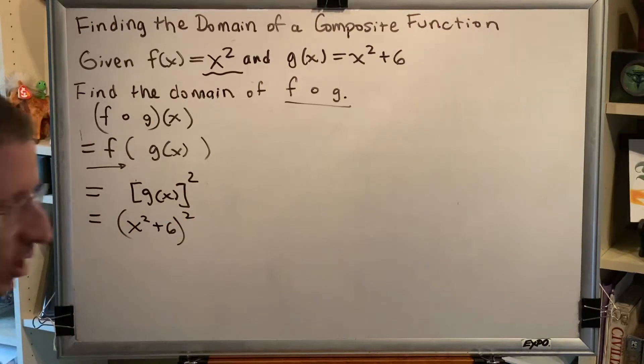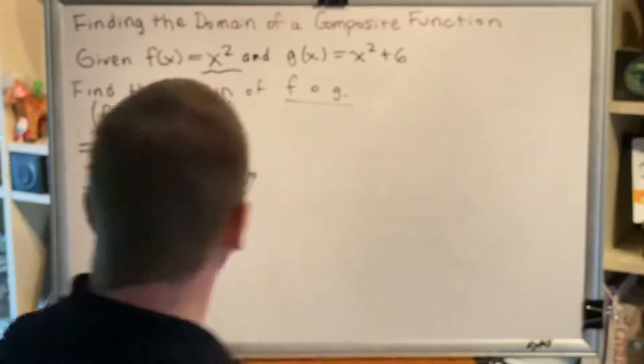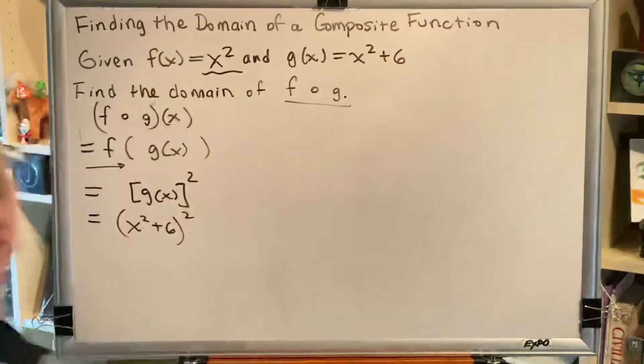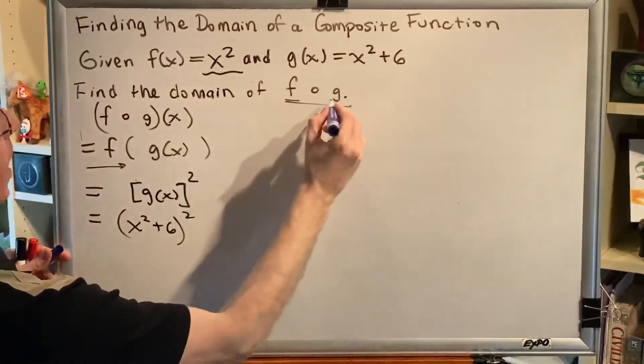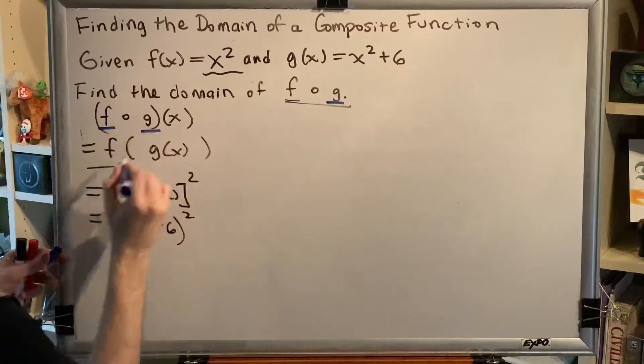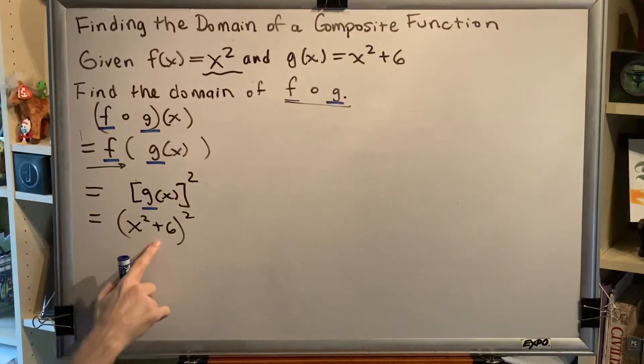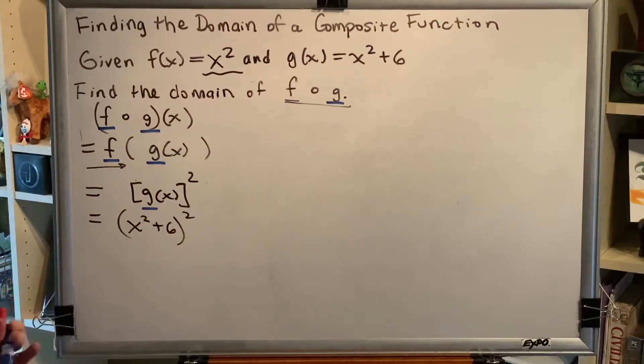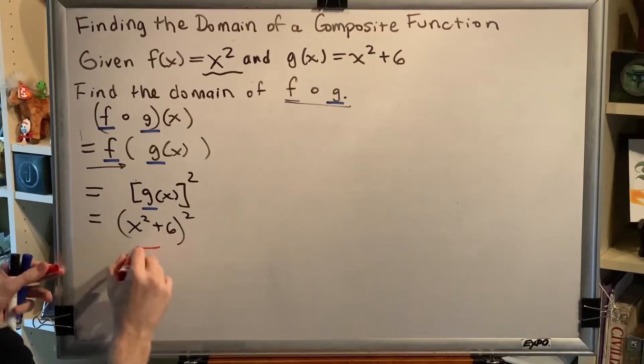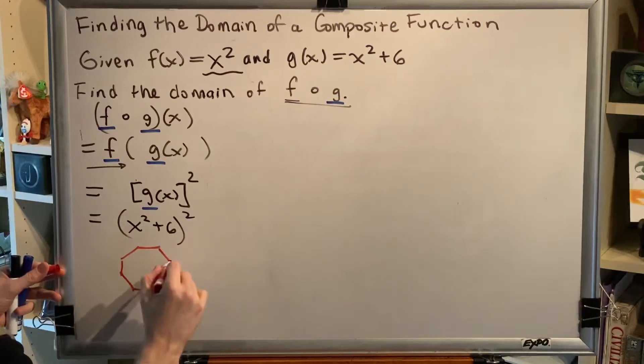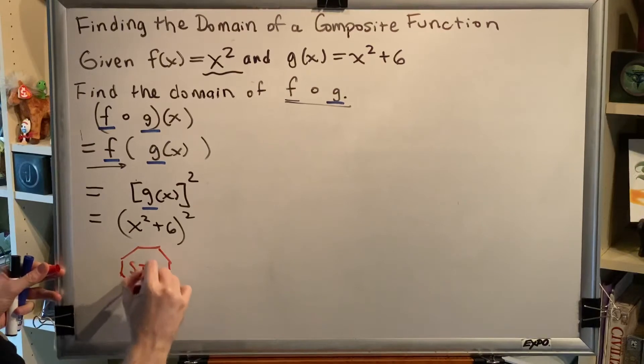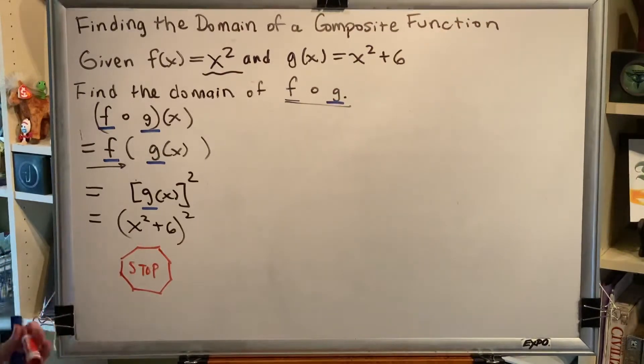This is the first line of algebra we've written that does not contain the names of our functions f and g. Therefore, this is the moment where we stop and determine our domain using the four steps learned earlier in the semester.